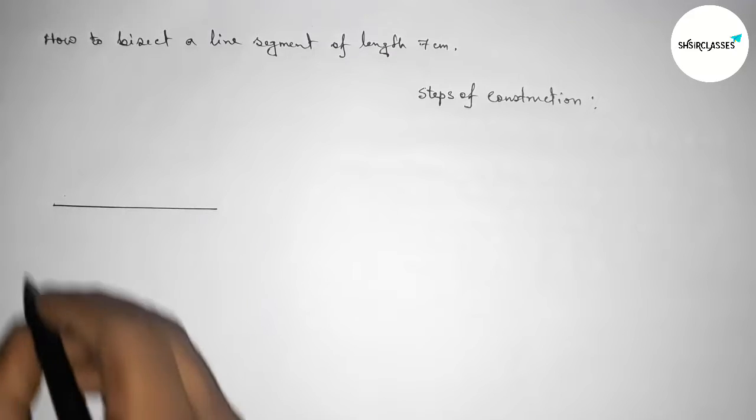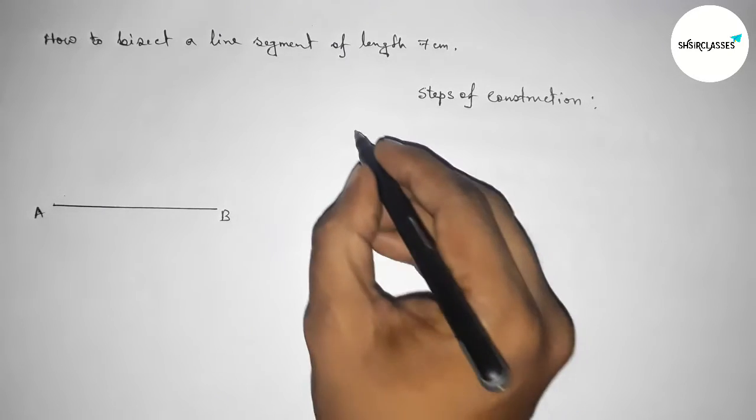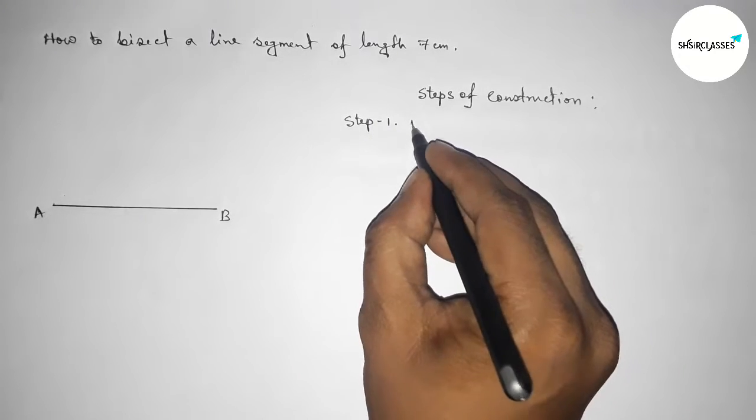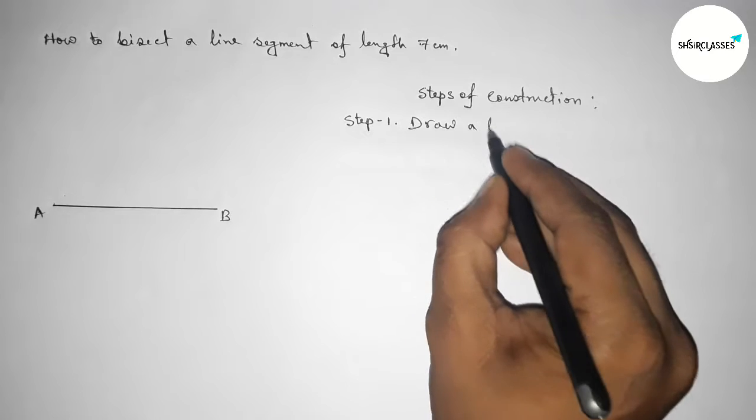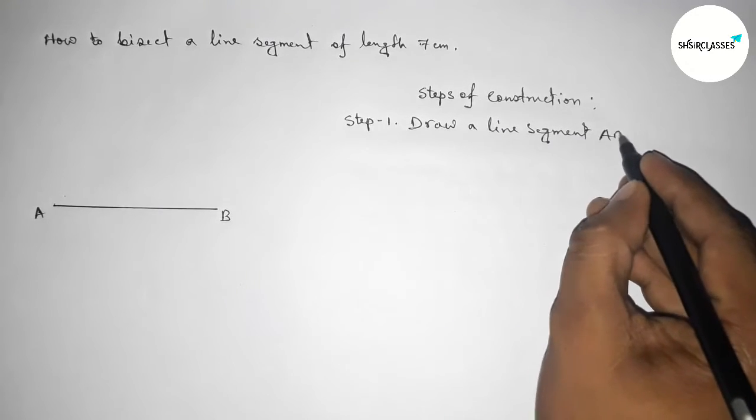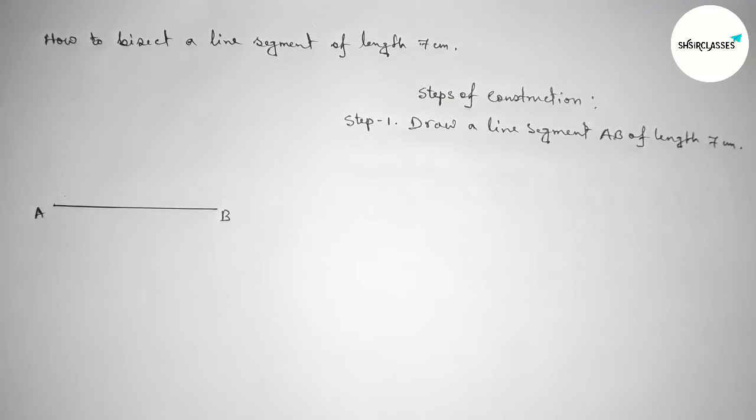Okay, so taking here point A and here B. So step number one: first we have to draw a line segment AB of length 7 centimeters by using scale.